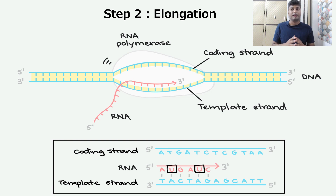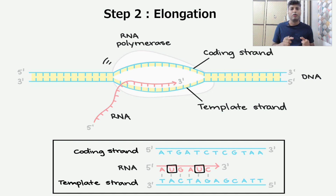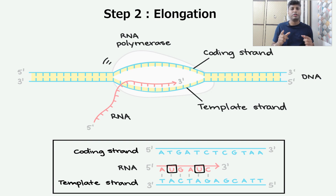Once the DNA strands are separated, the RNA polymerase enzyme starts forming the new RNA with the help of nucleotides. The formation of RNA always occurs in the 5' to 3' direction. That means the formation of new RNA occurs on the strand which is 3' to 5', and this strand is called the template strand — this is the strand on which the formation of RNA occurs. The other strand of DNA, which runs from 5' to 3', is called the coding strand.